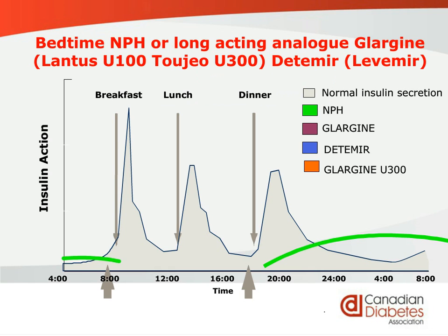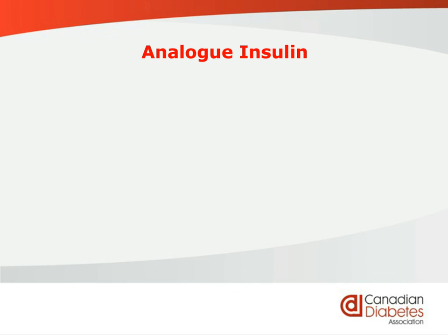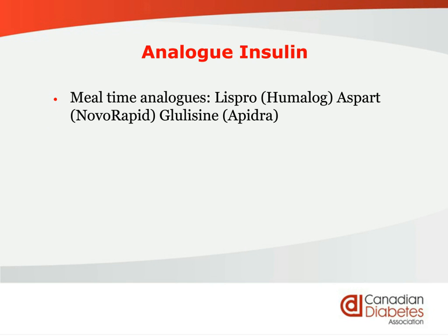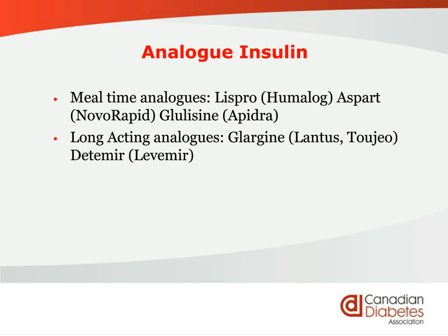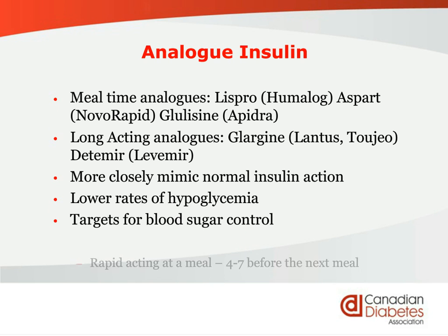Bedtime insulin is the most commonly prescribed first insulin, and some people will never need another insulin once they get their fasting blood sugars correct by increasing the dose. The analog basal insulins — Lantus and Levemir — produce a much flatter line than NPH, which has a greater chance of causing low blood sugar. The analogs more closely mimic what happens in the body and cause less hypoglycemia. For meal time, the analogs are Humalog, NovoRapid, and Apidra. The once-a-day long-acting types are Lantus, Toujeo, and Levemir.